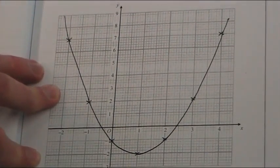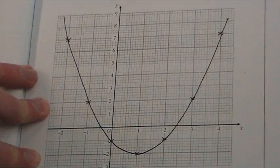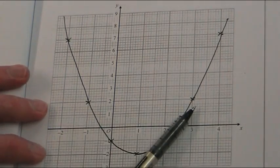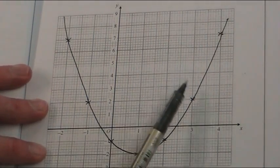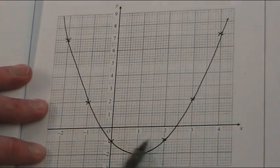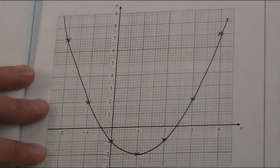Now, if you've plotted them correctly, it should look like this. This is a fantastic way as well of checking whether this table above is correct, because if you don't have these symmetrical points, you know your answers above are wrong.